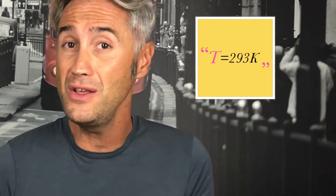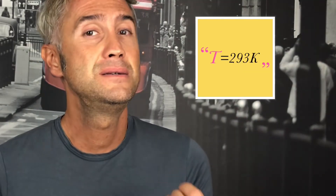The fifth quantity is temperature. The symbol is T, the unit is Kelvin, and the symbol of the unit is K. For example, I can say that in my room there are 293 Kelvin.